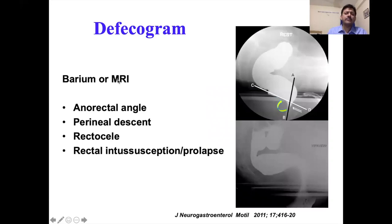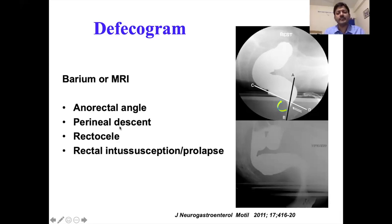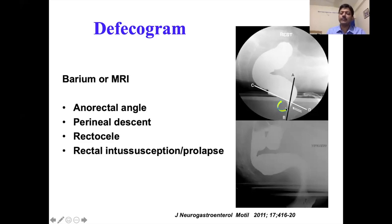MRI is expensive and not freely available, but if available, it may be a good choice. On defecography, we look at the anorectal angle, perineal descent, presence of a rectocele, or intussusception. The anorectal angle is drawn between a line through the anal canal and a line through the posterior wall of the rectum. During normal defecation, this angle increases — becoming straighter — to allow easier passage of stool.